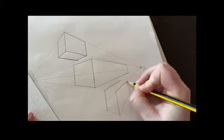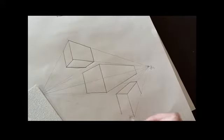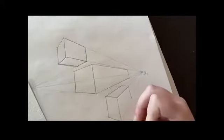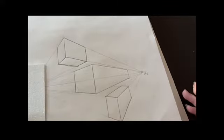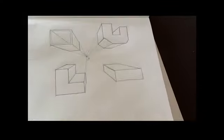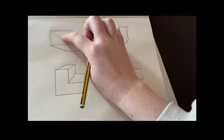An easy way to remember which vanishing points you need to join to is just to double check if the top of that line or bottom of that line is already joined to a vanishing point, then you don't need to join it to that one. You just join it to the one it's not already attached to.